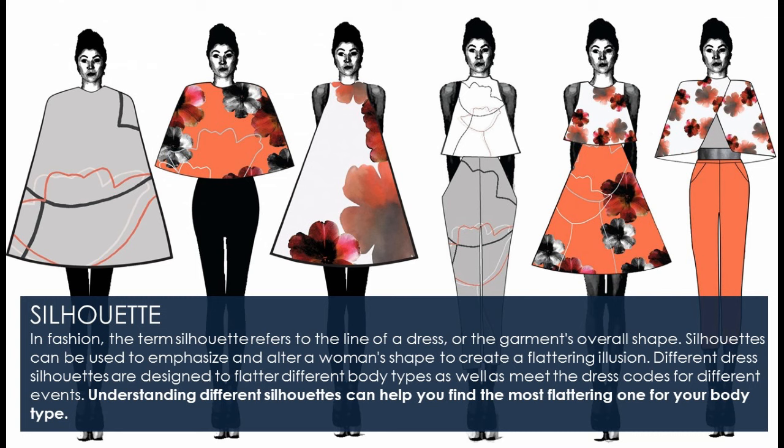Understanding silhouette: In fashion, the term silhouette refers to the line of a dress or the garment's overall shape. Silhouettes can be used to emphasize and alter a woman's shape to create a flattering illusion. Different dress silhouettes are designed to flatter different body types as well as meet dress codes for different events. Understanding different silhouettes can help you find the most flattering one for your body type.